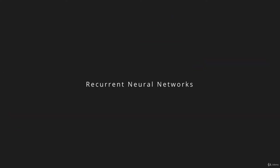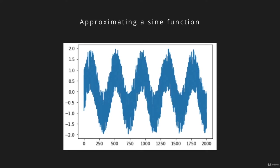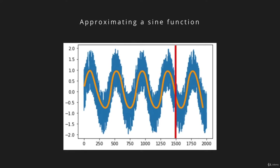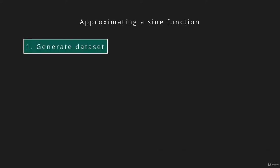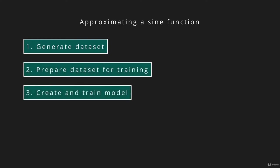In the next few videos, we're going to take a more practical approach by solving a recurrent neural network problem — a time series problem. We're going to feed sequences from a noisy sine function into our RNN model and from that recover the actual sine function. We'll only feed the first 1500 time steps for training, allowing the network to also perform a prediction for the last 500 time steps. There are four main steps: create the dataset by generating a noisy sine function, prepare the dataset for training, create and train the model, and finally plot the results.